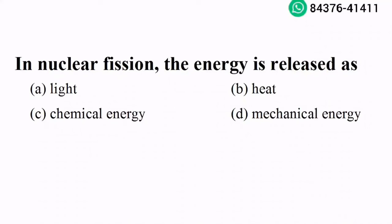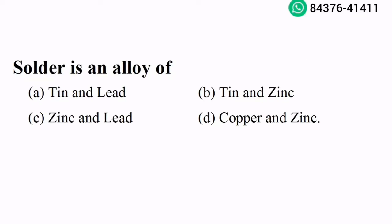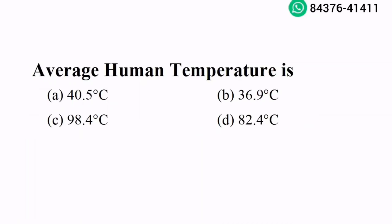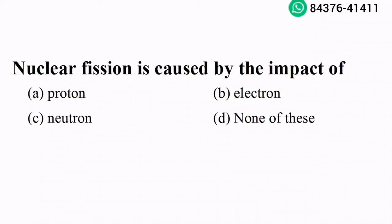In nuclear fission, the energy is released as heat. Option B is the right answer. Solder is an alloy of tin and lead. Option A is the right answer. Average human body temperature is 36.9 degrees Celsius. Option B is the right answer. Nuclear fission is caused by the impact of a neutron. Option C is the right answer.